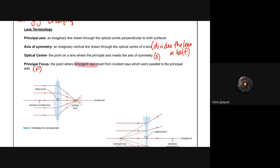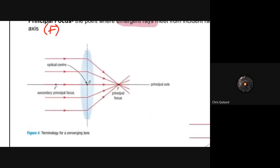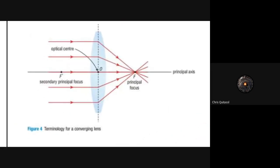In a converging lens, all of the incident rays that travel parallel to the principal axis, once they hit the lens, they refract and they all converge on the principal axis. That's where the converging lens gets its name. It converges all perpendicular incident rays to the center principal focus of the lens.